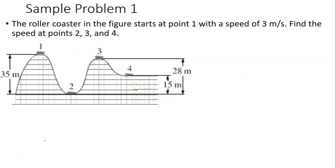This first sample problem is a roller coaster problem, which are pretty common with conservation of energy problems. The roller coaster in the figure starts at point 1 with a speed of 3 meters per second. Find the speed at points 2, 3, and 4.